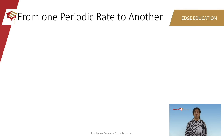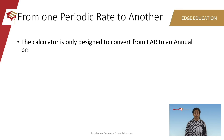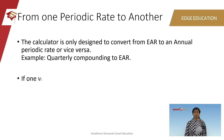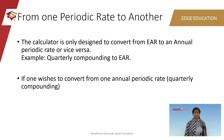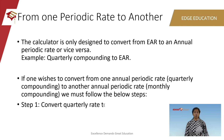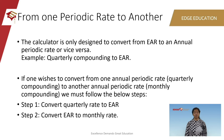Let's take an example on how to convert from one periodic rate to another. Before we get into the example, there are a few things you need to know about your calculator. Your calculator is only designed to convert from effective annual rates to an annual periodic rate or vice versa — for example, from quarterly to annual or annual to monthly — but not from a periodic rate like monthly to another periodic rate like quarterly. If you wish to convert from one periodic rate, say quarterly compounding, to another periodic rate, say monthly compounding, you must follow two steps. Number one: convert your quarterly rate to an effective annual rate. Number two: convert your effective annual rate to the desired monthly rate.